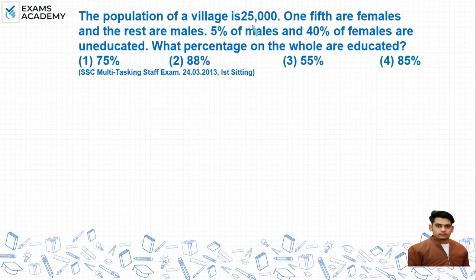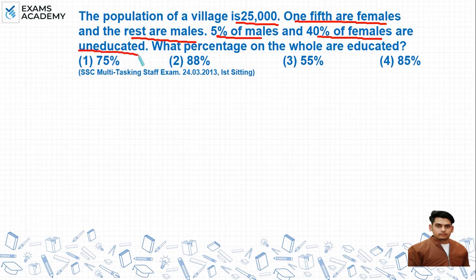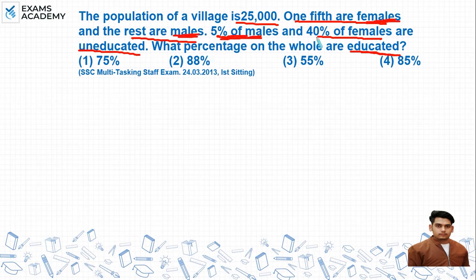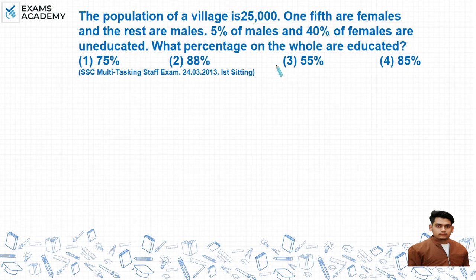Question: Population of a village is 25,000. One-fifth are females and the rest are males. 5% of males and 40% of females are uneducated. What percentage of the whole population are educated? तो question में given है कि एक village है, इसमें 25,000 total population है, one-fifth females हैं, बाकी males हैं, 5% males और 40% females uneducated हैं — total educated population कितनी होगी?